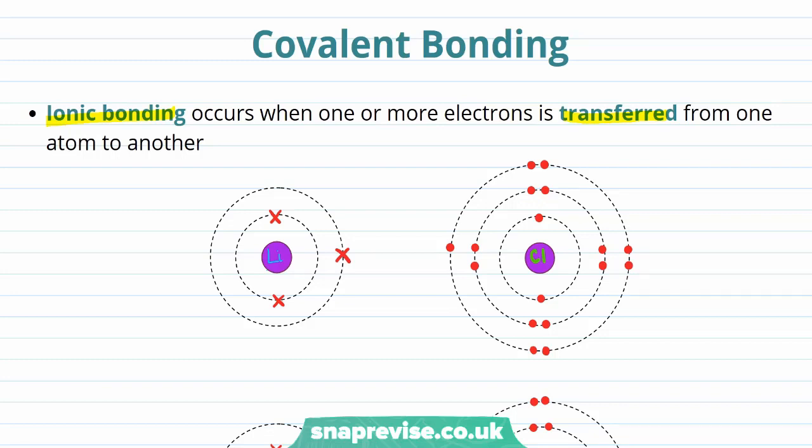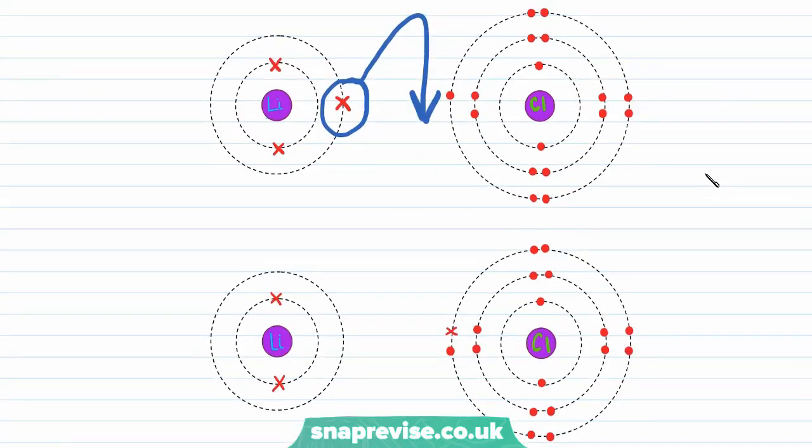If lithium and chlorine react together in order to form an ionic bond, what happens is that this outermost electron from the lithium atom is transferred over to the chlorine atom. And we can see the result of this if we look at our next picture.